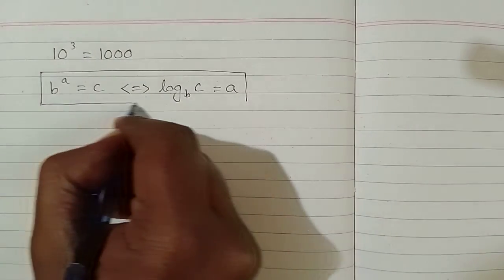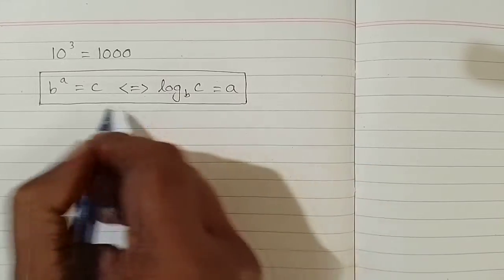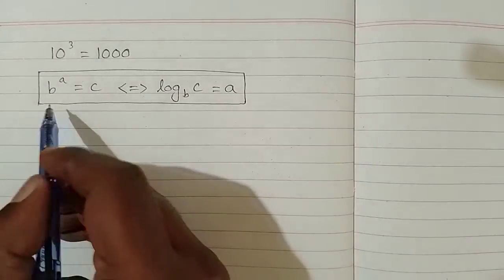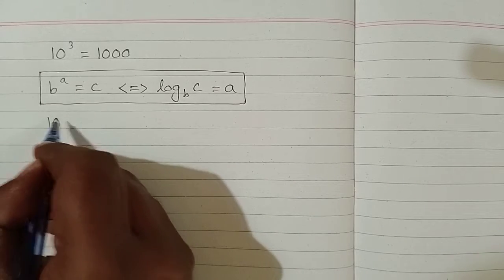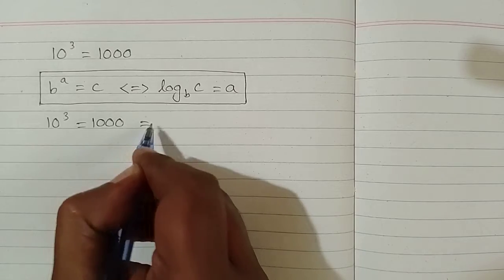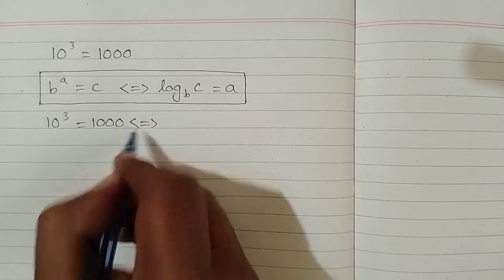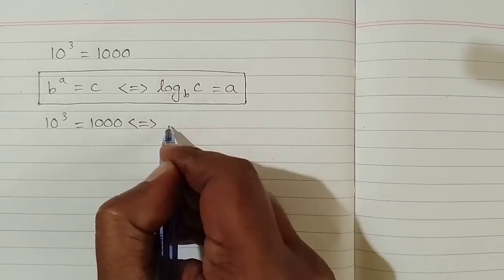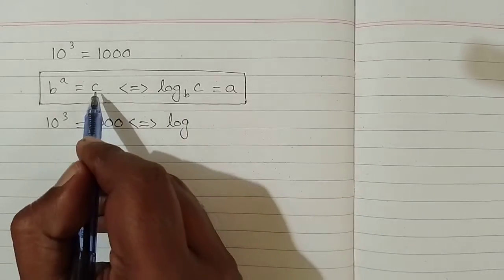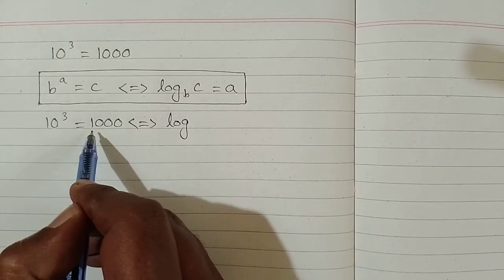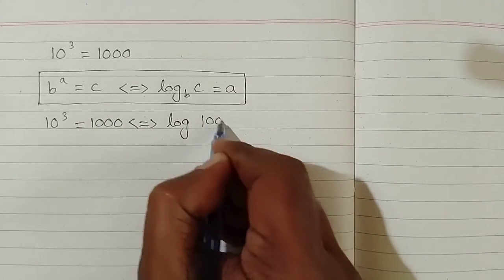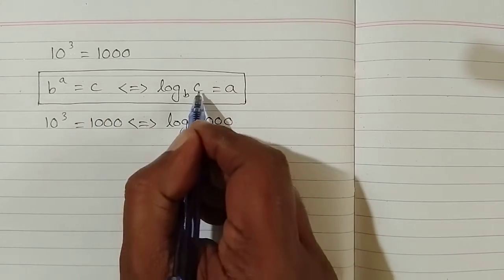We can use this definition to convert this index form into logarithmic form. First we write 10 cubed is equal to 1000, and then this can be written as log of c. We can see that we have 1000 in place of c, so we will write 1000 here in place of c.